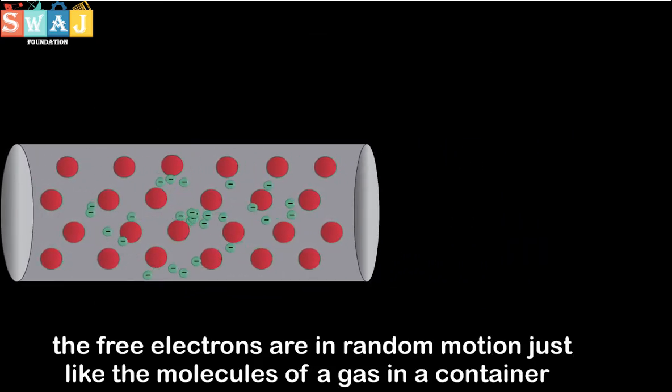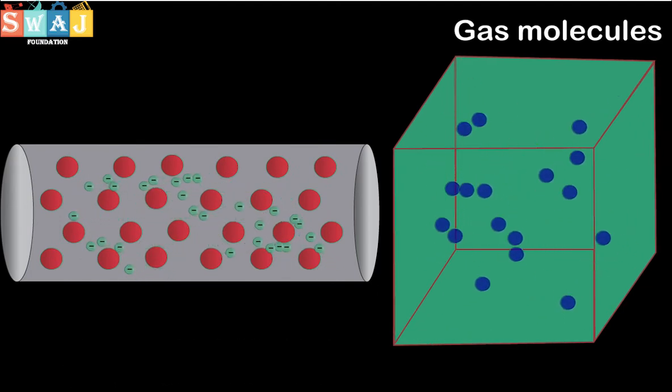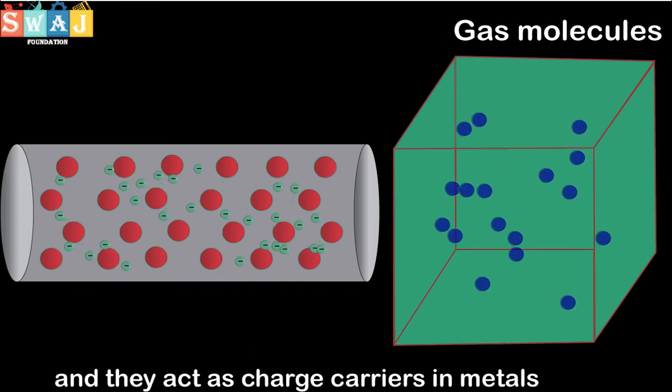The free electrons are in random motion just like the molecules of a gas in a container and they act as charge carriers in metals.